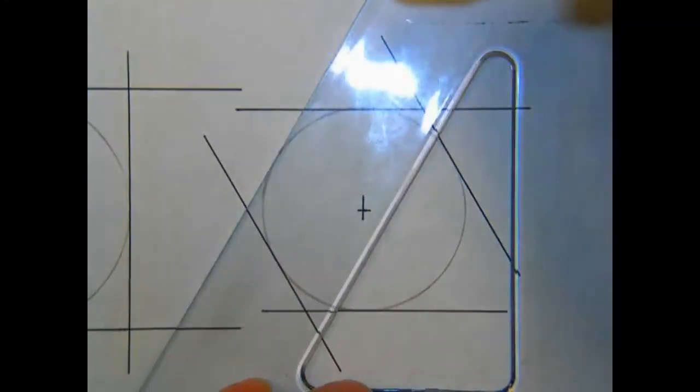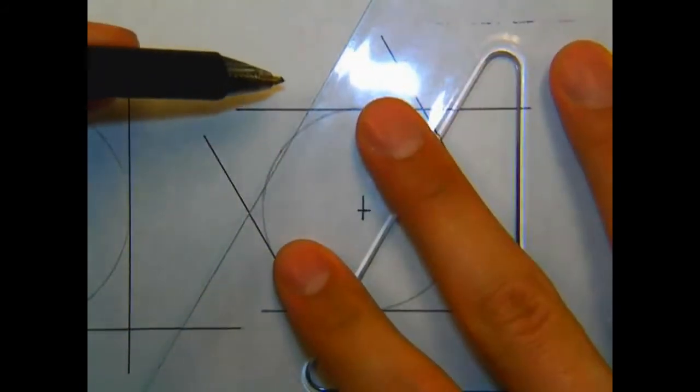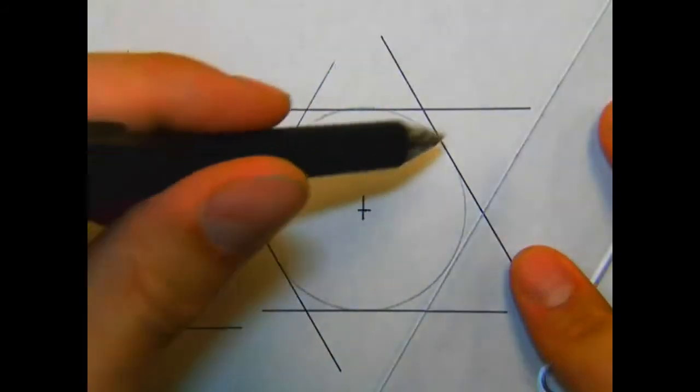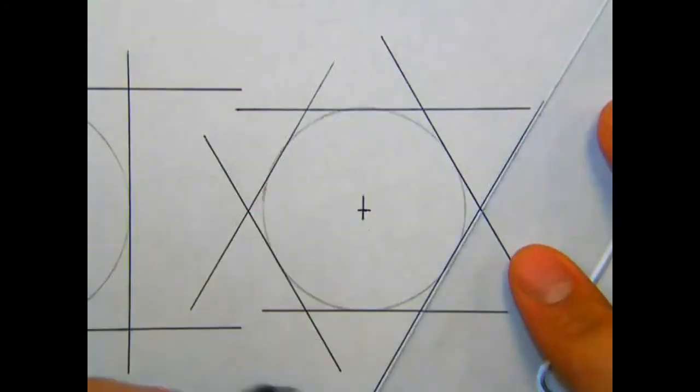We'll flip the triangle and do it for the other sides of our hexagon, again keeping the lines tangent to the circle.